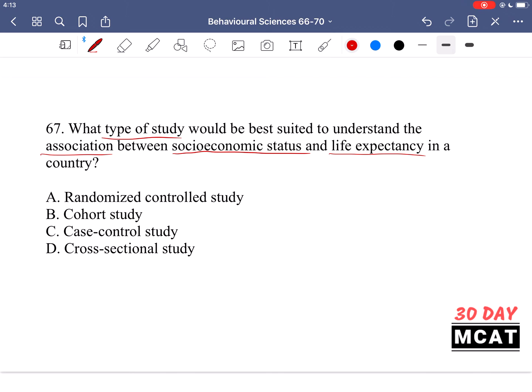Option A, a randomized control study. This is a very strong and powerful type of study where you randomly assign your individuals into different groups and then look at the outcome. However, realistically, this is not ethically sound because you can't put someone in a group in which they have a low socioeconomic status and then see what the outcome on their health is. That's just not ethical.